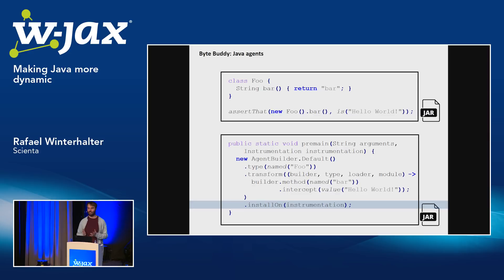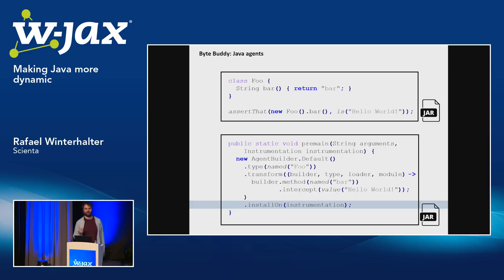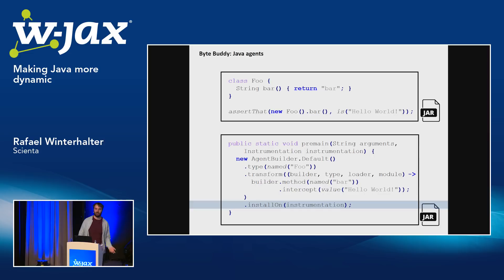This is of course a nonsensical example, but it's used to make it simple to understand. You can use this, for example, to inject Prometheus extraction into an application because it would be tedious to find all the classes that end with Service in a huge code base. Instead you define an agent where you say all types that end with Service in a certain package, if the method is public, log the runtime of the method to Prometheus. This is then typically 50 lines of code in ByteBuddy and an agent, put it on, and it works without even having to recompile the legacy application. You can also inject Java 8 parts into a code base that still builds in Java 5 without breaking the original build.